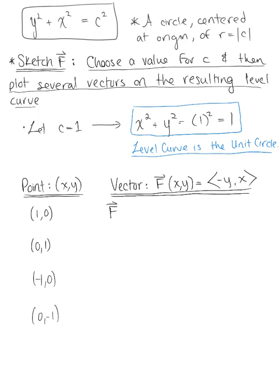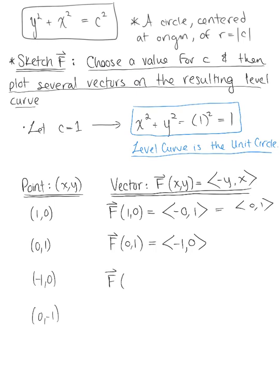Substituting each point into our vector field F(x, y) = (-y, x): at (1, 0) we get (-0, 1) = (0, 1); at (0, 1) we get (-1, 0); at (-1, 0), where y = 0 and x = -1, we get (0, -1); and at (0, -1), we get (-(-1), 0) = (1, 0).